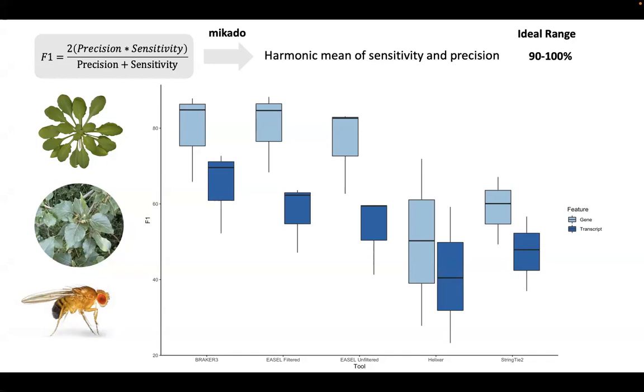Helixer and StringTie2 do not fare as well, suggesting machine learning and RNA evidence together are necessary to produce the highest quality annotation.